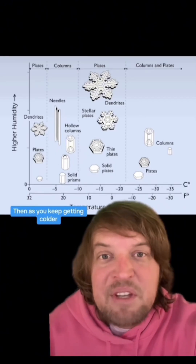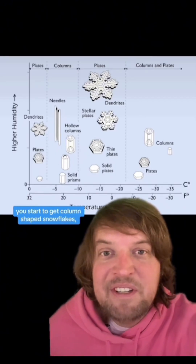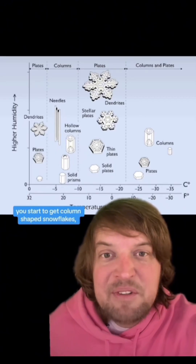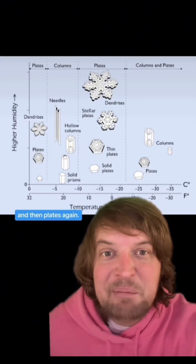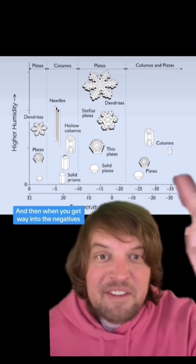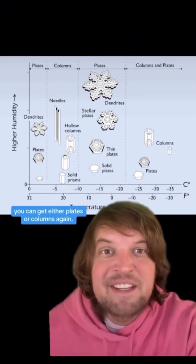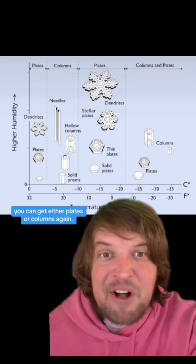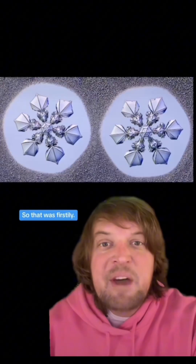Then as you keep getting colder, you start to get column-shaped snowflakes and then plates again. And when you get way into the negatives, you can get either plates or columns again. So that was firstly.